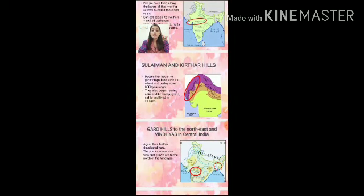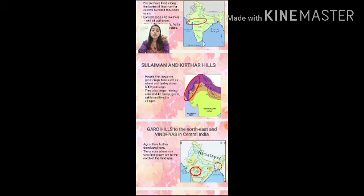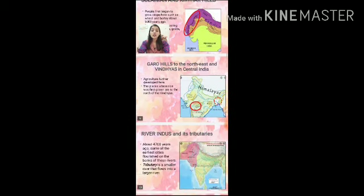The Sulaiman and Kirthar hills, located in parts of Pakistan, Balochistan, and southwestern Punjab, were among the first places where crops such as wheat and barley were grown around 8,000 years ago. People living here also began rearing and domesticating animals like sheep, goats, and cattle, which provided dairy products and wool. These people started living in villages.